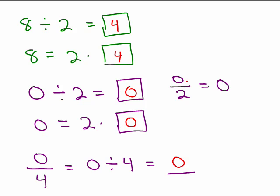So we got 0 divided by 2 is 0, and we just now also found 0 divided by 4 was 0. And, in fact, any time the 0 is in the numerator and you're dividing it by some other number that's not 0, the answer is going to be 0.